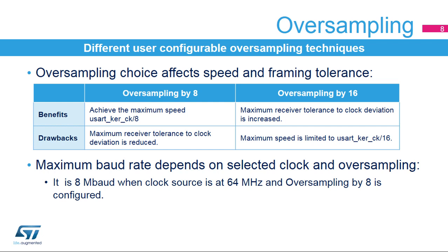Select oversampling by 16 to increase the tolerance of the receiver to clock deviations. In this case, the maximum speed is limited to USART KerClock divided by 16. The maximum baud rate that can be reached is 8 mega baud when the clock source is at 64 MHz and oversampling by 8 is configured. With other clock sources and/or higher oversampling ratios, the maximum speed is limited.